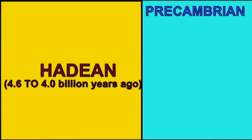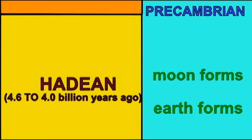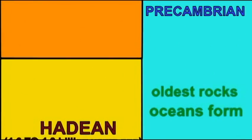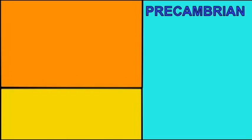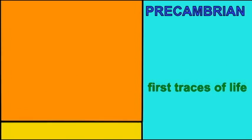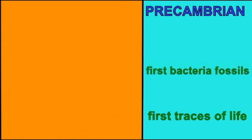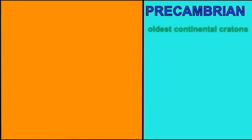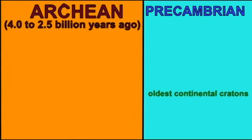Planet Earth is truly ancient. For half a billion years, there is no life on Earth whatsoever. During an eon known as the Archean, the first simple cells occur.